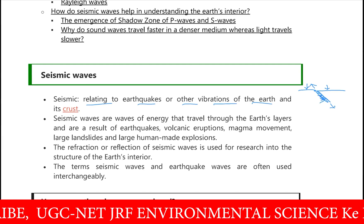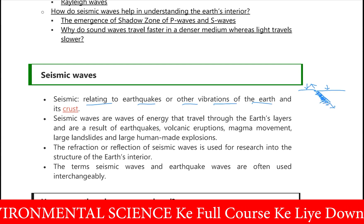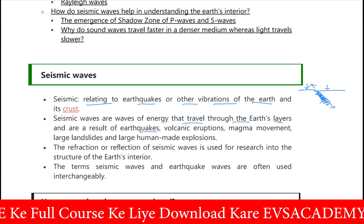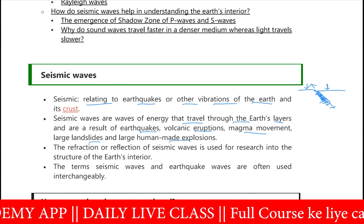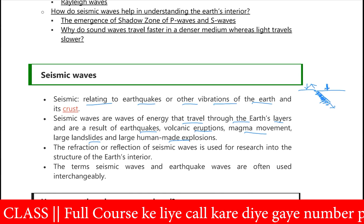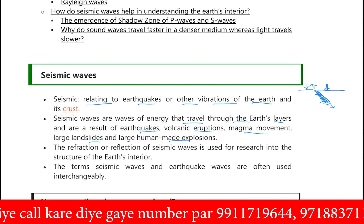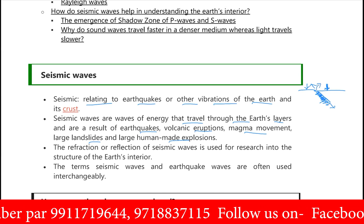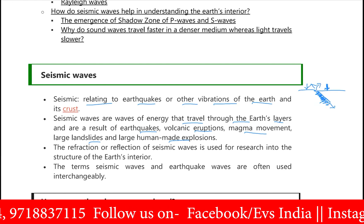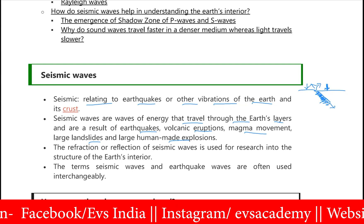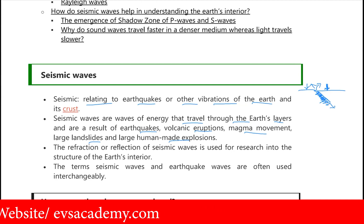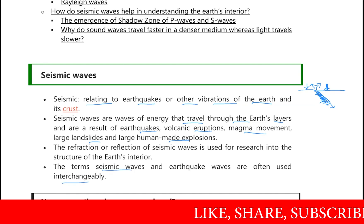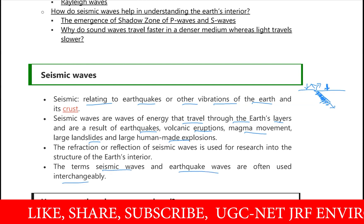Seismic waves are waves of energy that travel through the earth's layers and are a result of earthquakes, volcanic eruptions, magma movement, large landslides, and large human-made explosions. The refraction and reflection of seismic waves is used for research into the structure of the earth's interior. The terms seismic waves and earthquake waves are used interchangeably — both mean the same thing.